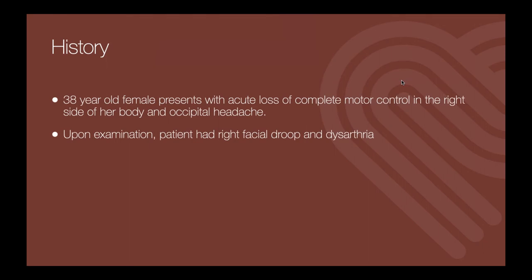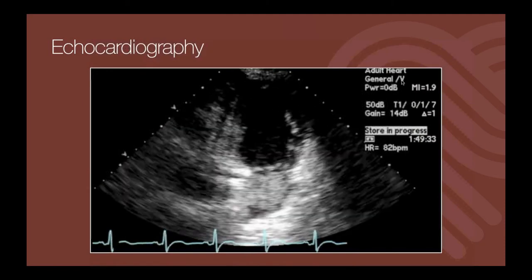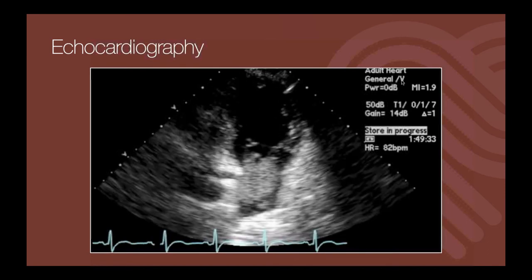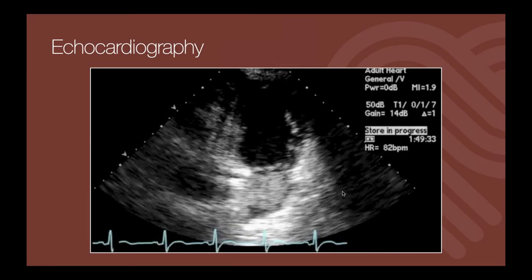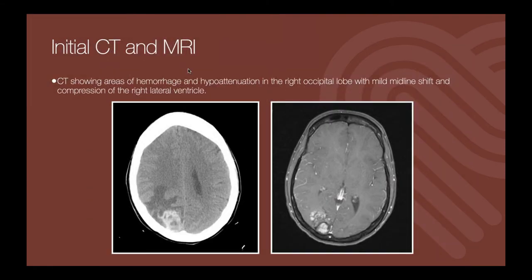Case two: a 38-year-old female with acute neurological issues — facial droop and dysarthria. This doesn't look like a normal case for a cardiac imaging meeting, but here's the echo. We have a mass in the left atrium, bouncing and seemingly attached to the interatrial septum, moving toward the mitral valve plane. These are buzzwords for the most common intracardiac benign tumor — an atrial myxoma. But the patient presented for neurological issues.